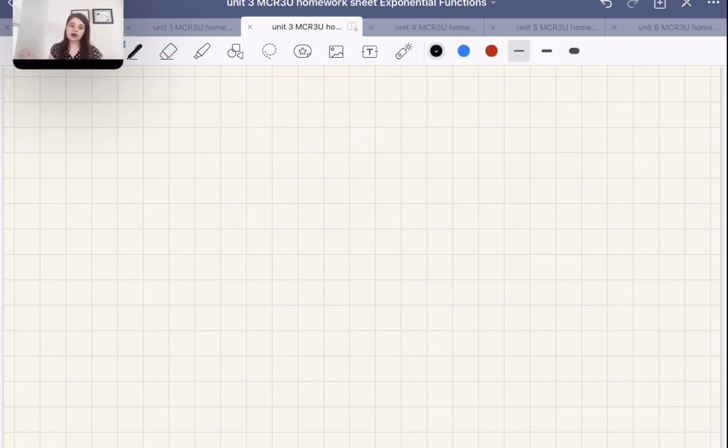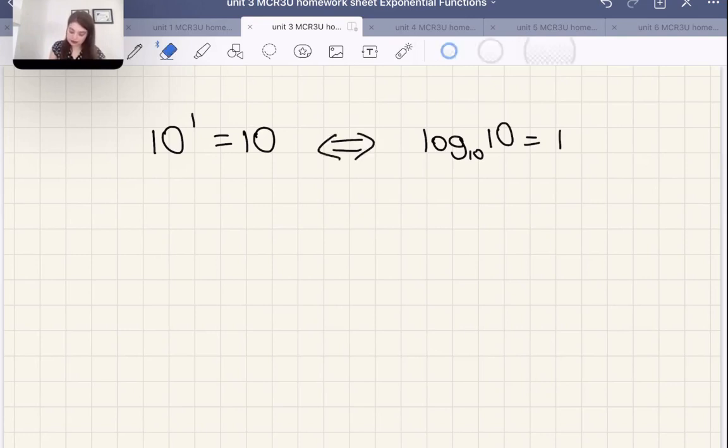We know that 10 to the power of 1 equals 10. Very straightforward. Let's write this in logarithm form. Log with a base 10 to the power of 1 equals 10. These two things are equivalent. These are the same statement, just written in two different forms. This is exponential, and this is logarithmic form, but they mean the same thing.